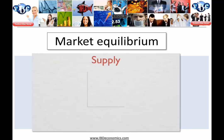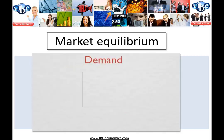Let's start with supply. A supply curve is a relationship between the price of a certain good and the amount of that good producers make. Let's say they're producing umbrellas. Supply curves typically slope upwards since a higher price means producers can earn more from each item they sell, so it's worth it for them to produce more of that item.